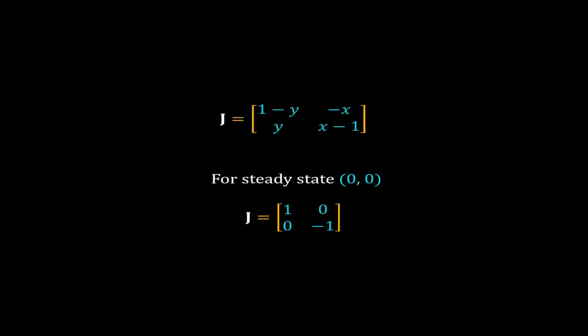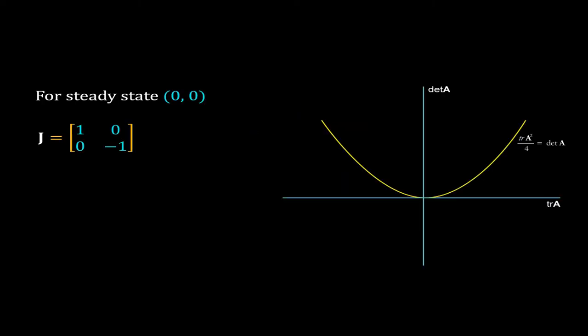First, we will calculate the stability of the steady state at 0, 0. So replace the values of X and Y with 0 in the Jacobian. Now we will check the trace determinant plot of this Jacobian. The trace is 0 and the determinant is minus 1. We are below the trace axis. So this steady state is a saddle.